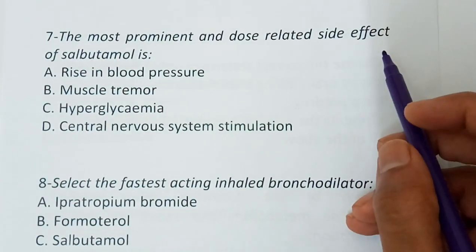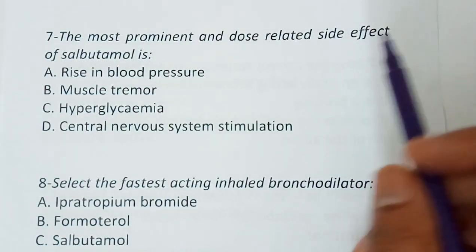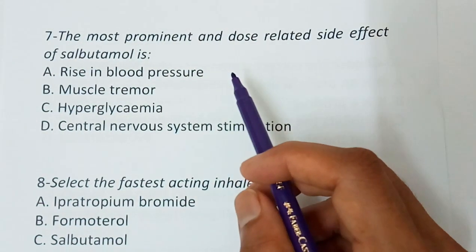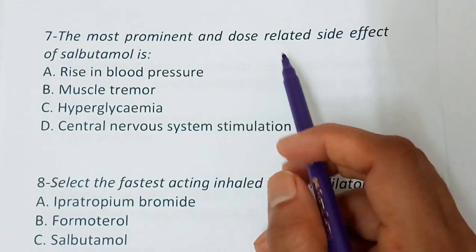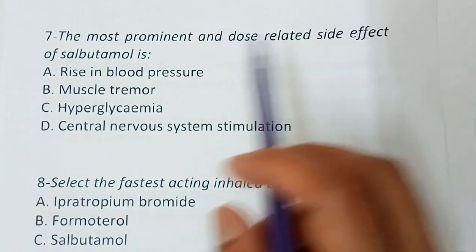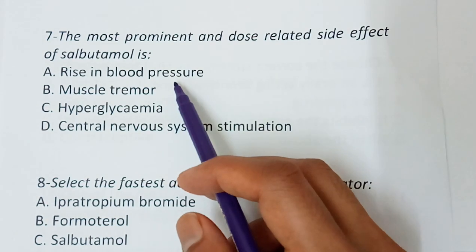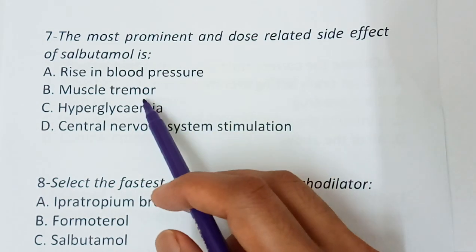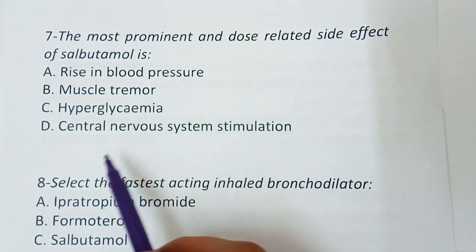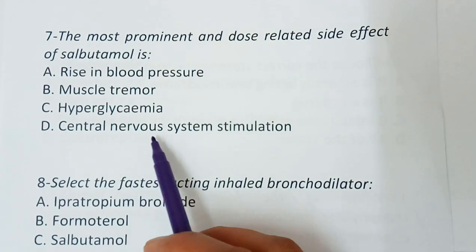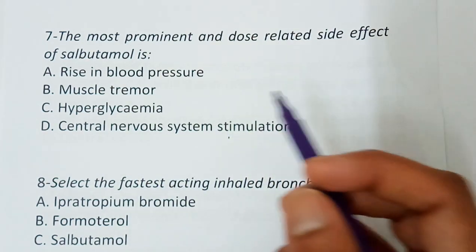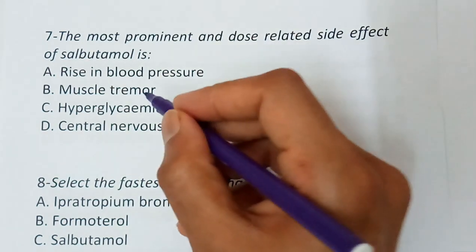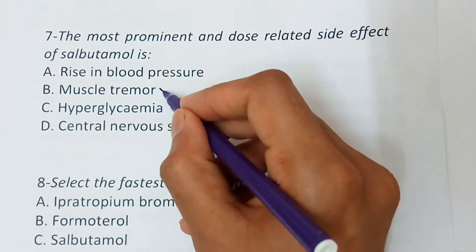Question number seven: The most prominent and dose-related side effect of salbutamol — rise in blood pressure, muscle tremor, hyperglycemia, or central nervous system stimulation. The correct answer is muscle tremor.